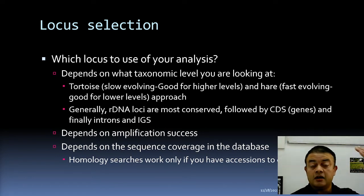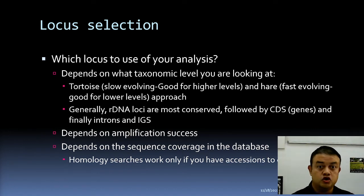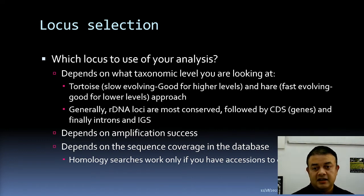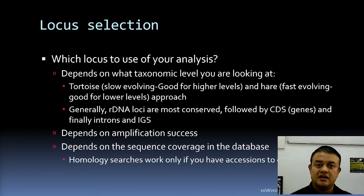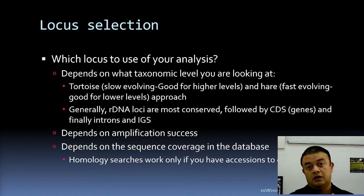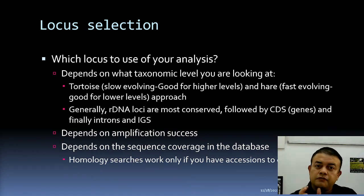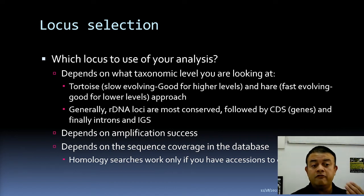Are you looking at a higher taxonomic level — order, class, kingdom, or domain — or at a low taxonomic level like species or intraspecific diversity? This is best understood through the tortoise and hare analogy. Some loci are like tortoises — they evolve very slowly — and are good for higher-level phylogenetic reconstruction such as domain, class, or order. Other loci are like hares — fast evolving — and are good for lower taxonomic levels.